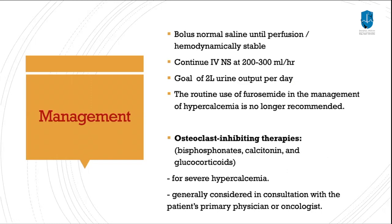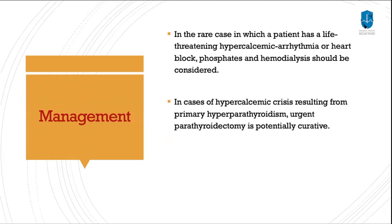For management of hypercalcemia: give a bolus of normal saline if the patient is hemodynamically stable, then continue IV normal saline at 200 to 300 mL per hour, targeting a urine output of 2 liters per day. Routine use of furosemide in hypercalcemia management is no longer recommended. Osteoclast-inhibiting therapies such as bisphosphonate, calcitonin, or steroids for severe hypercalcemia should be started in consultation with the primary physician. In real cases of life-threatening hypercalcemia with arrhythmia or heart block, phosphate and hemodialysis should be considered. In cases of hypercalcemia crisis from primary hyperparathyroidism, urgent parathyroidectomy is potentially curative.